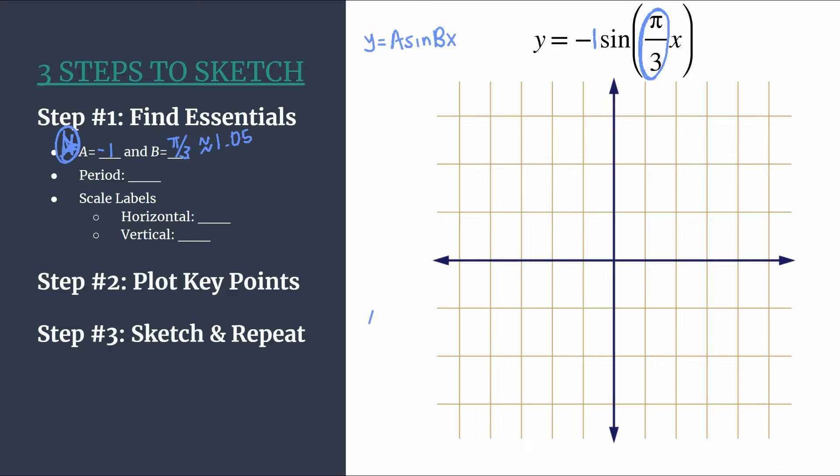b is also really important because we use it to find the period. And we do that by taking 2π and dividing by b. So let's write that out. To find the period, we do 2π divided by—since we're dividing by a fraction, let's multiply by the reciprocal. We'll rewrite 2π over 1. And you see, if we're going to cross cancel here, the π is actually canceled out. So we're just left with two times three or six.